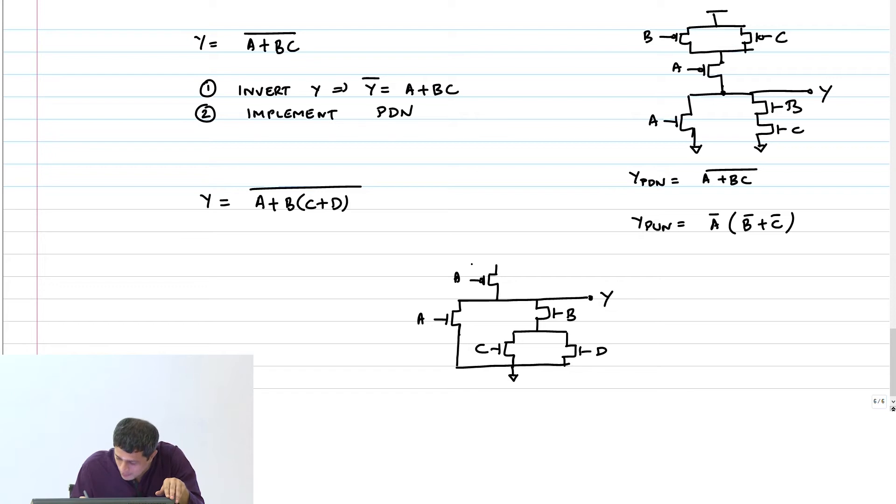So with this systematic method you can construct any arbitrary Boolean function. Whether it will be efficient or not we have to see later, but you can construct any static CMOS logic in this manner.